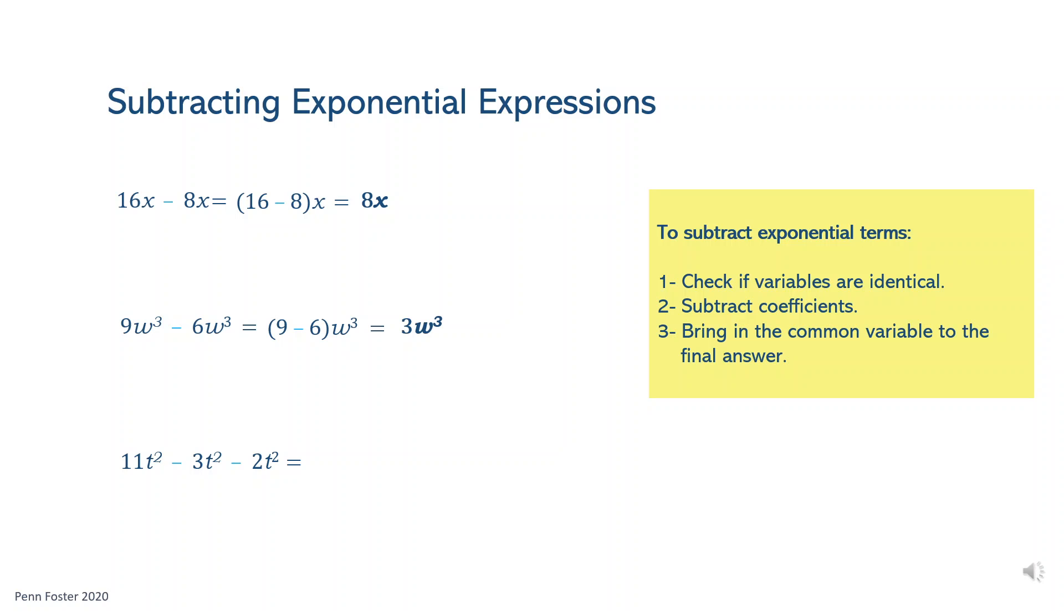The last exponential expression has 3 like terms. Therefore, subtract 11 minus 3 minus 2, which is 6. The answer is 6t squared.